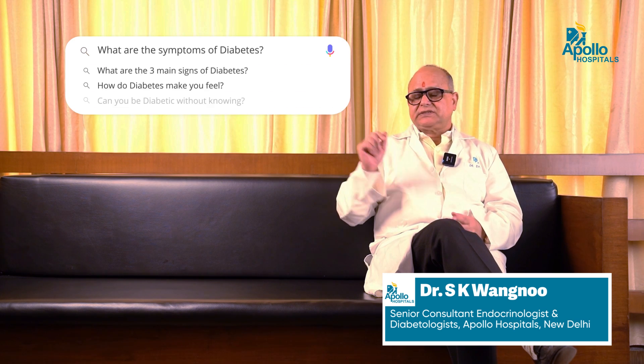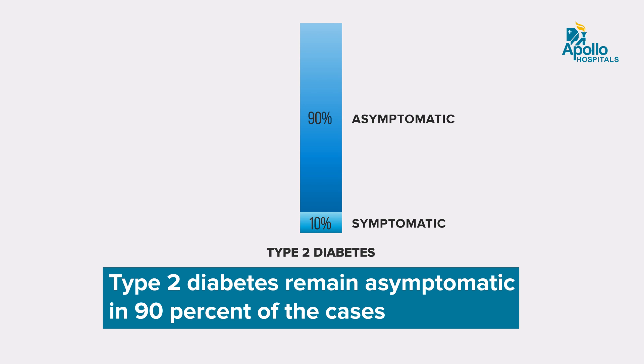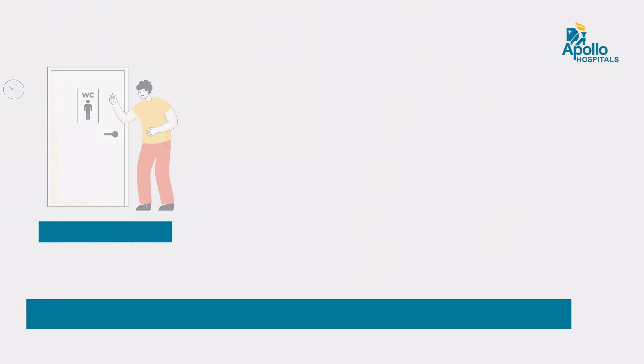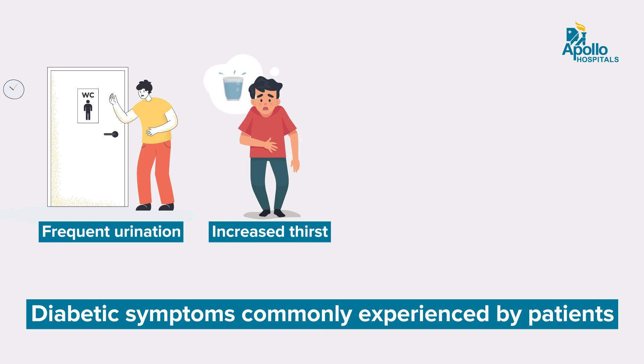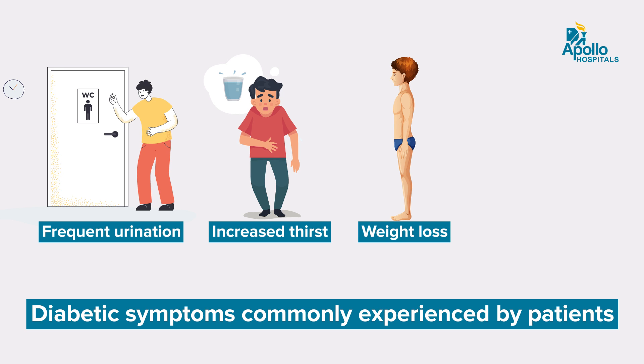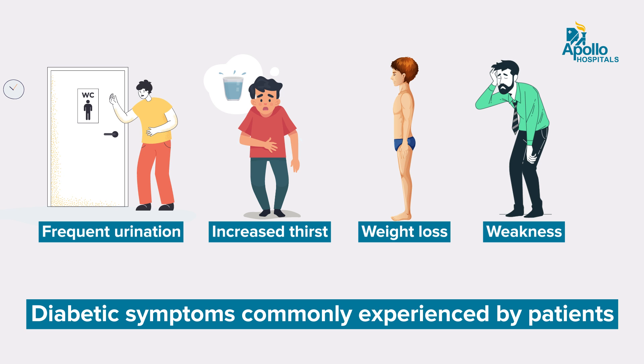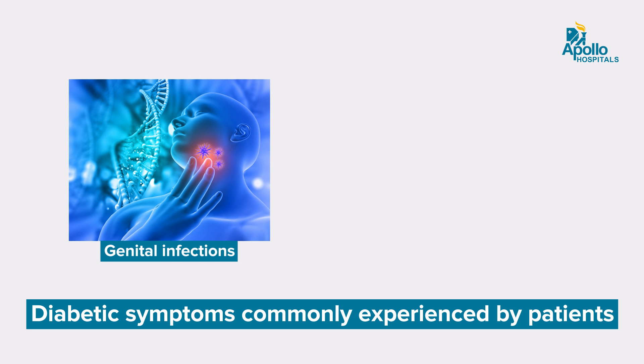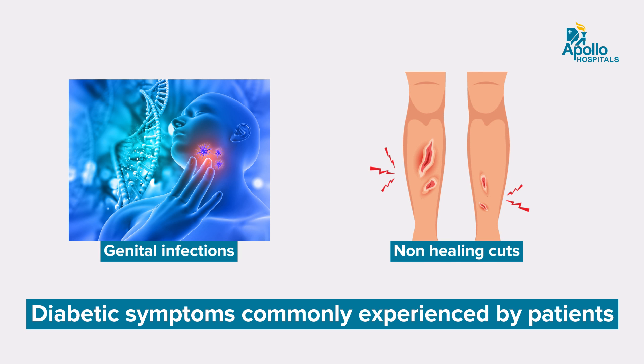What are the symptoms of diabetes? Normally, 90% of Type 2 diabetes patients remain asymptomatic. But the common symptoms by which patients present to us include frequent urination, increased thirst, unexplained weight loss despite a good appetite, unexplained weakness, lethargy, tiredness, some kinds of recurrent infections, and if you have cuts, they are not healing properly. So these are some of the common symptoms of diabetes.